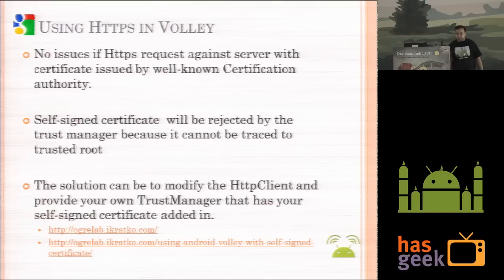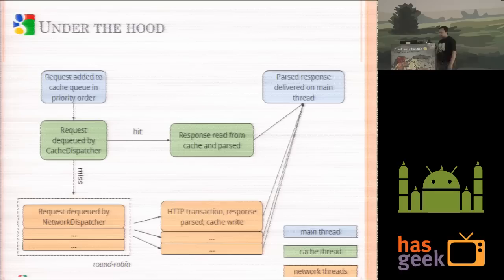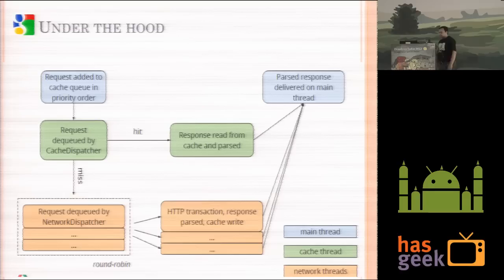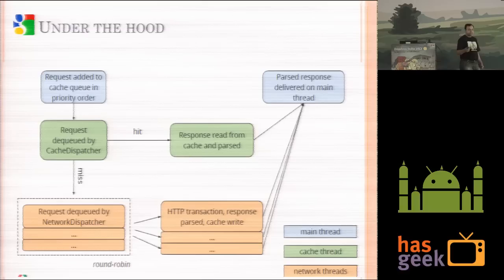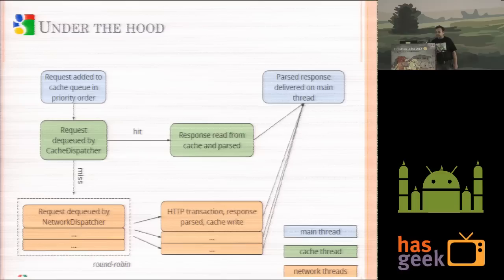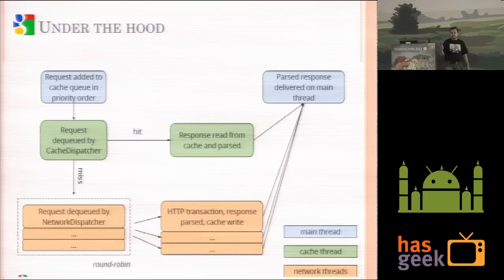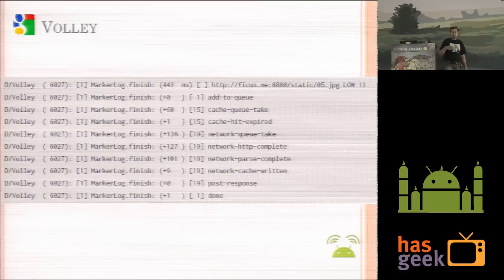When you call requestQueue.add(request), as shown in the diagram, the request is added to the cache queue. It's dequeued and checked by the cache dispatcher — on a hit, the response is sent back. On a miss, it's sent to the network dispatcher, which manages the maximum number of threads and executes requests in a round-robin fashion. You can also set request priority. Once the HTTP transaction returns a response, it caches it per your strategy and delivers it back. The logs you'd see: add to queue, cache queue, cache hit or expire, network queue take, network HTTP complete, parse complete, cache write, post response, done.